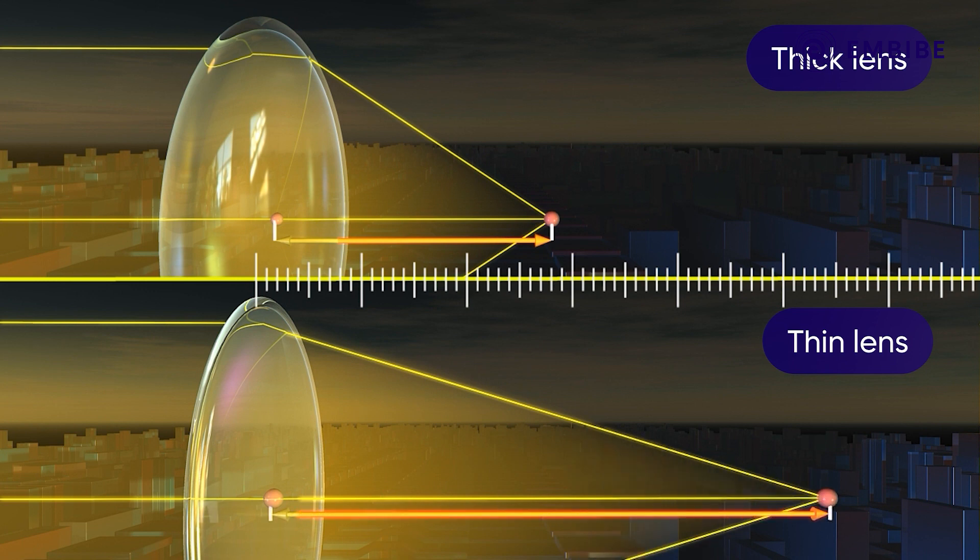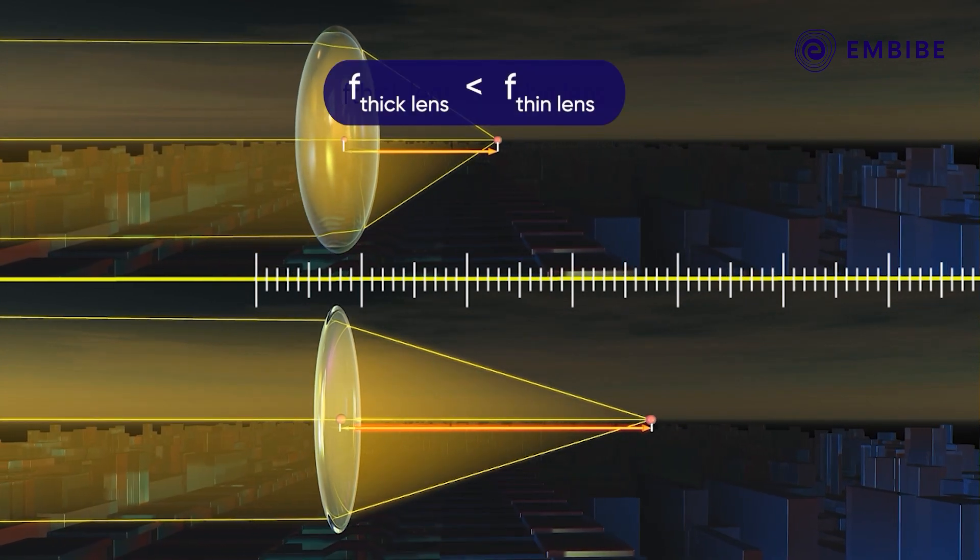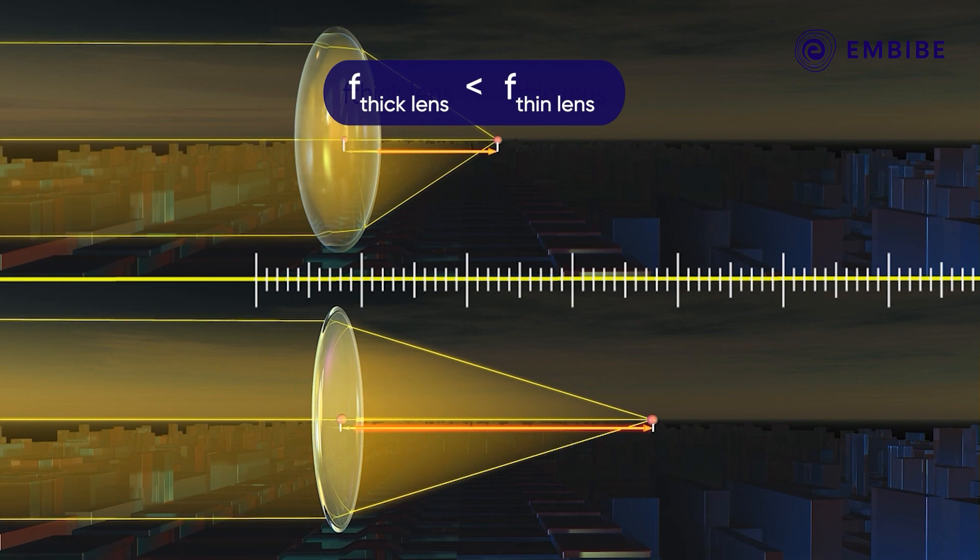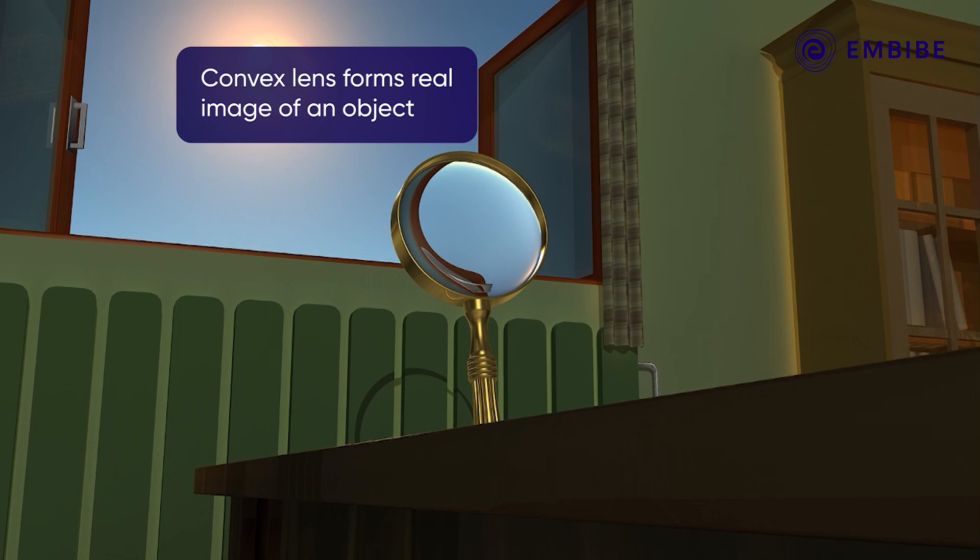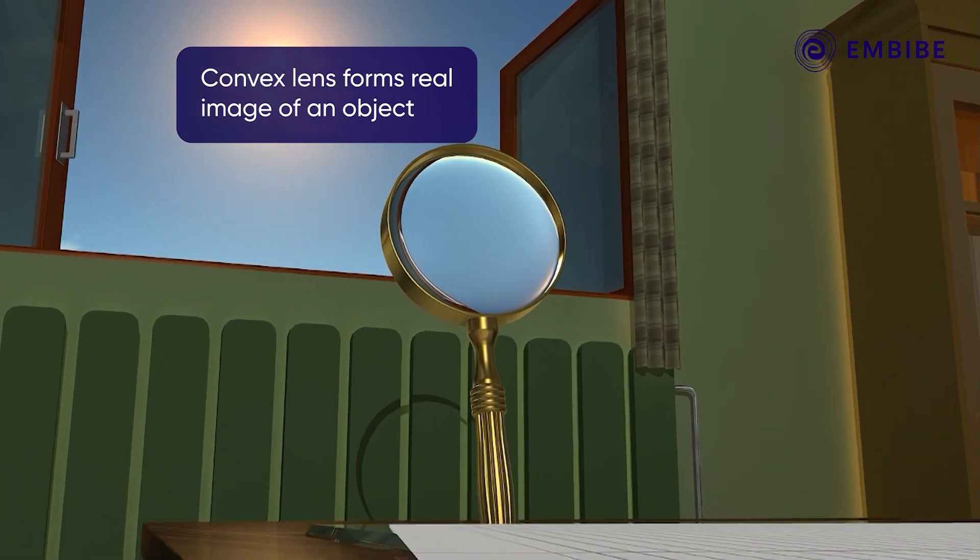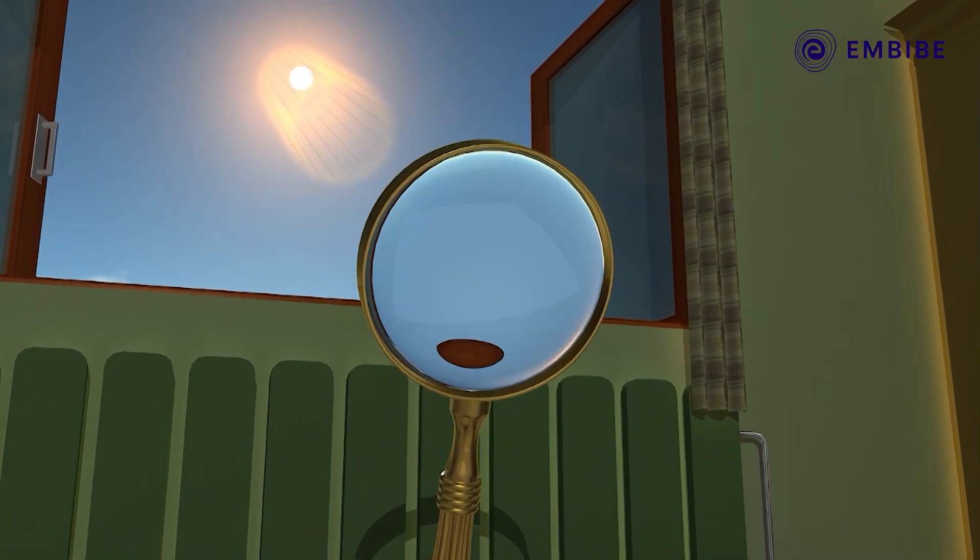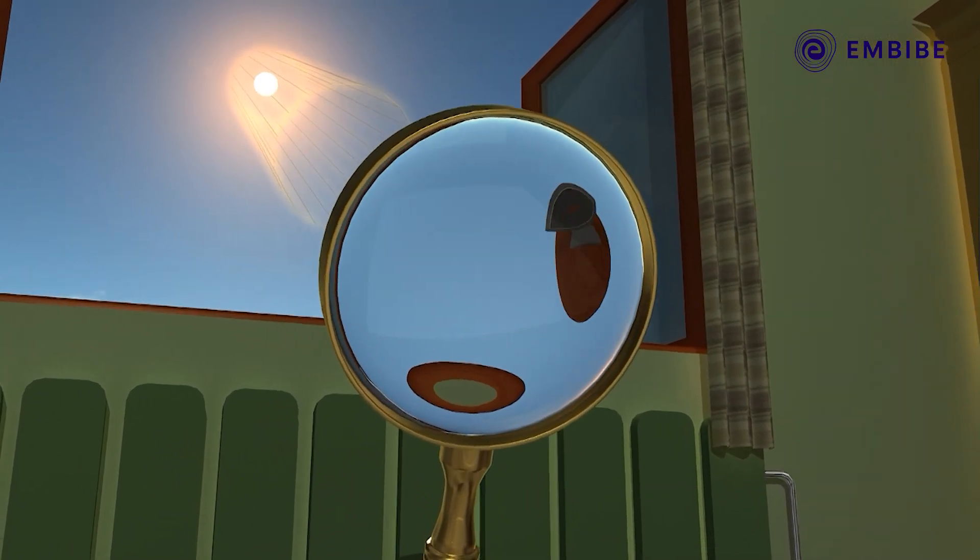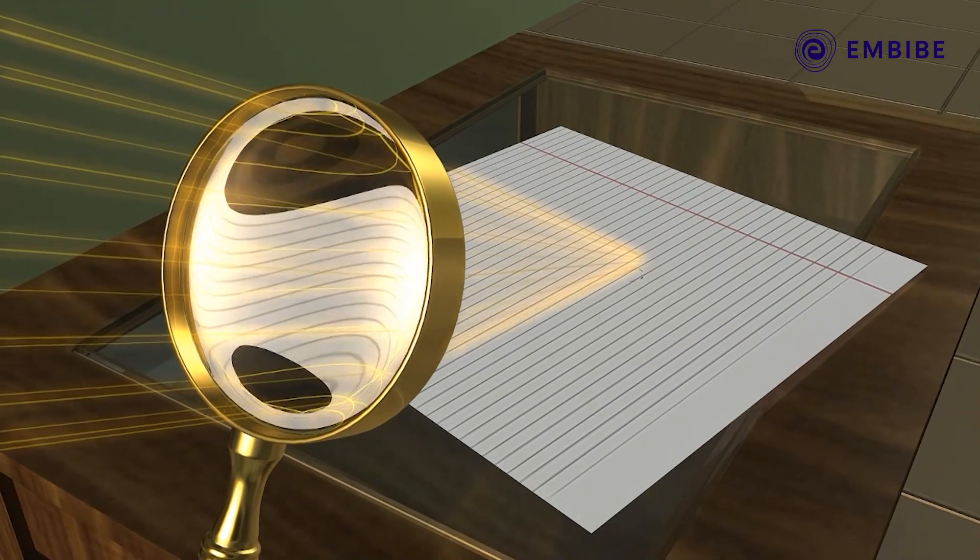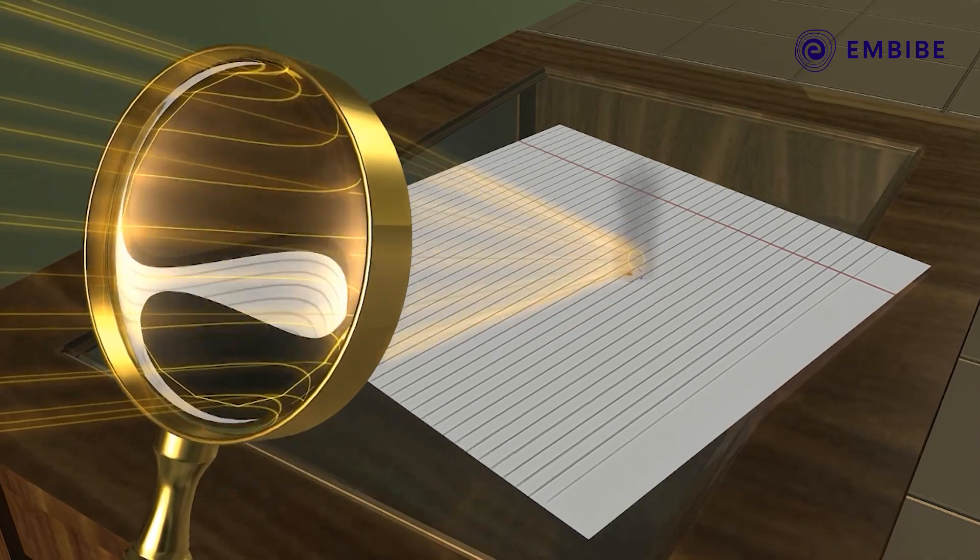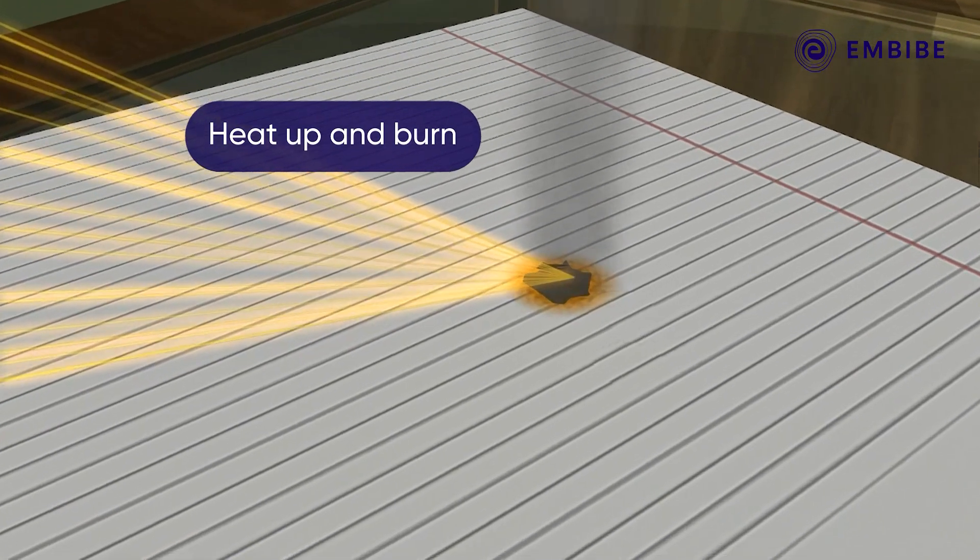which causes less refraction. So we can observe that the thick lens has a shorter focal length than the thin lens. The image formed by the convex lens in this case is a real image of an object. The convex lens can focus the light from the sun to a point on the other side of the lens. The concentration of light energy at this point causes the paper to heat up and burn.